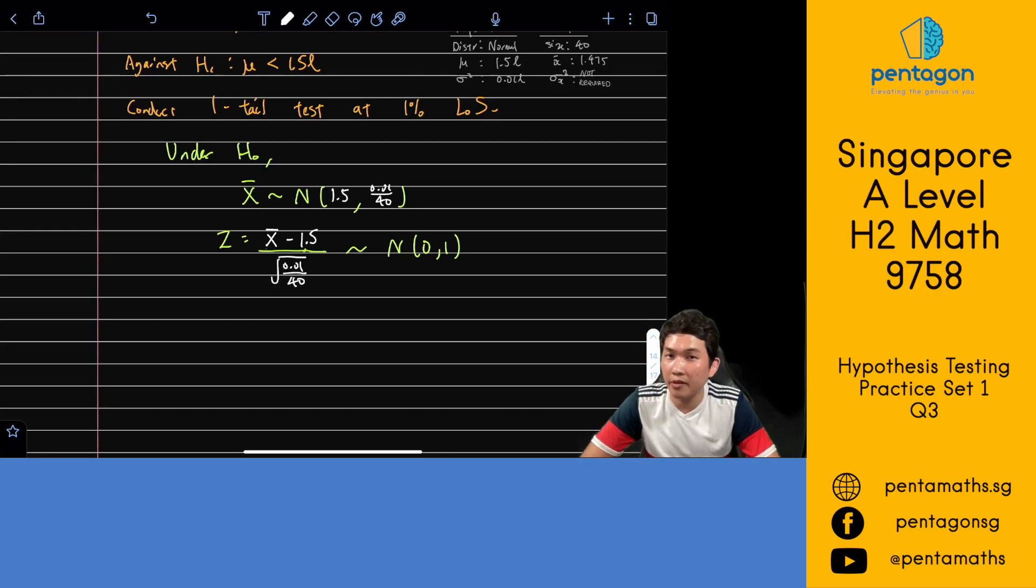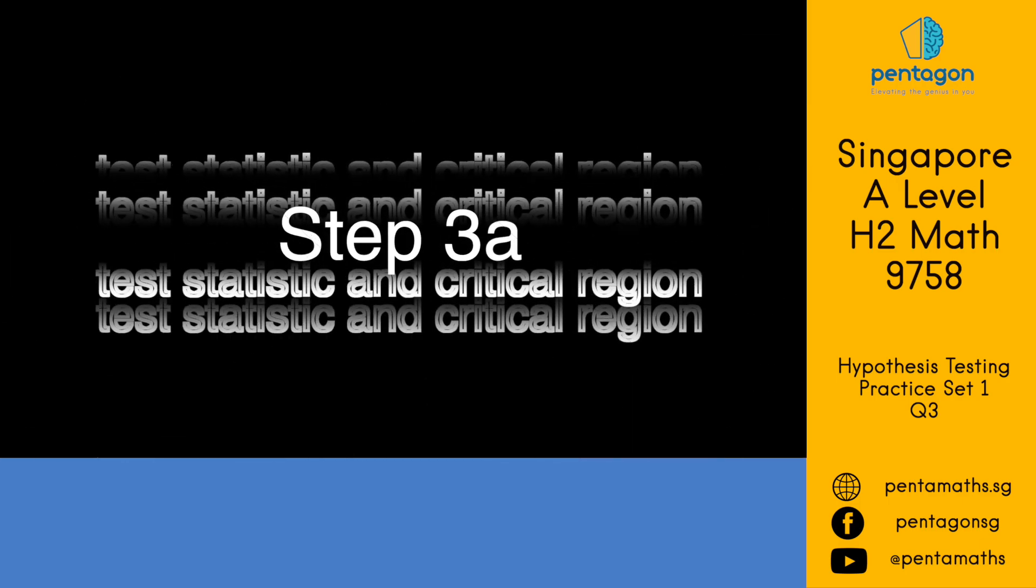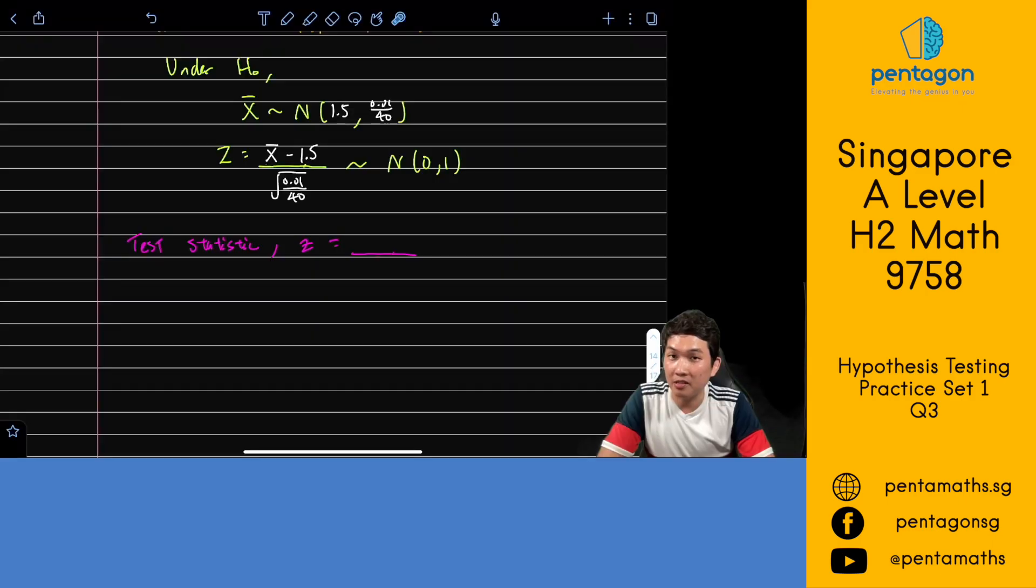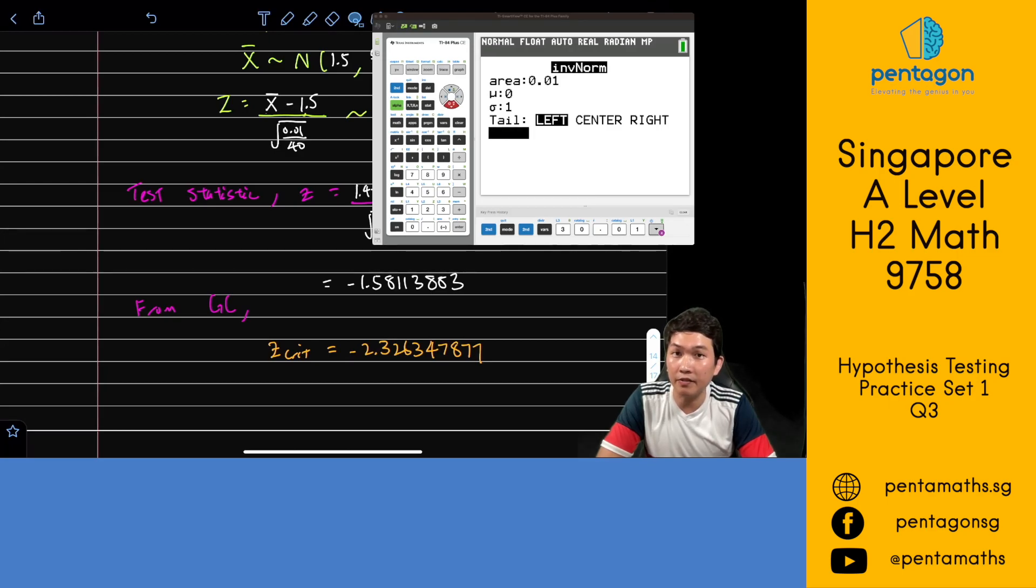Let's move on to step 3a. How can we conduct the test using the observed test statistic and the critical region? In order to work out our observed test statistic z, we have to take our observed sample mean 1.475 and subtract it by the alleged population mean 1.5 and divide by square root of 0.01 divided by 40. This is our test statistic z. Next, we want to find out where is the cutoff at 0.01. To work out the z critical value, we have to use our inverse norm function in our graphing calculator. Make sure you input these values in and you get this value.